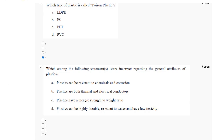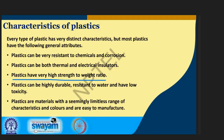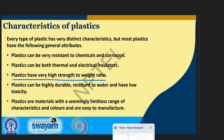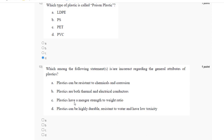Question number thirteen: which of the following statements is incorrect regarding the general attributes of plastic? Plastic has a very high strength-to-weight ratio, plastic can be resistant to chemical and corrosion, and plastic can be both thermal and electrical. The correct answer for question number thirteen is C, which is the incorrect statement.